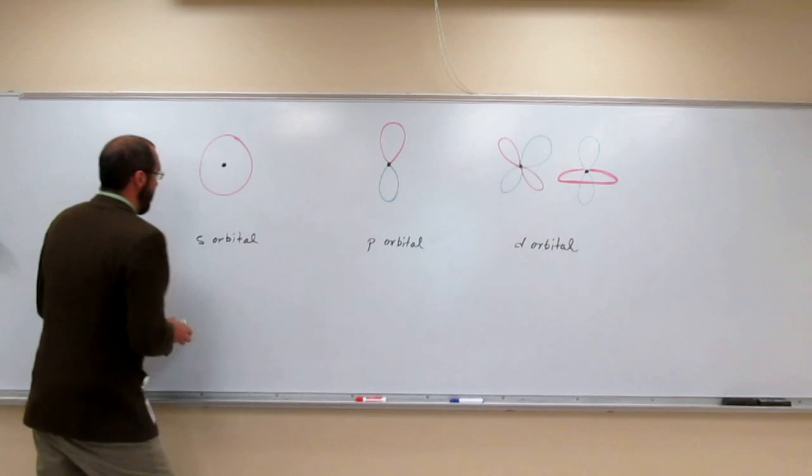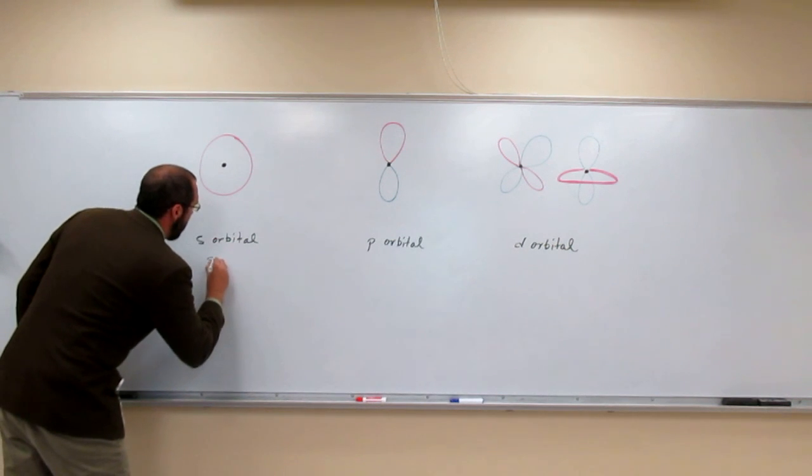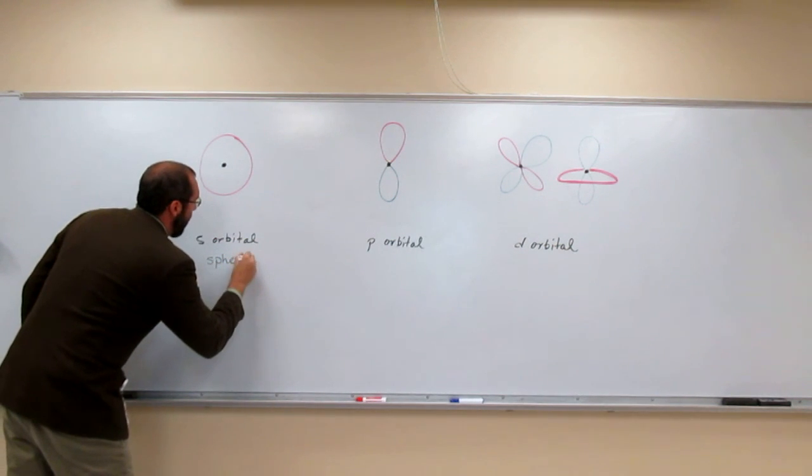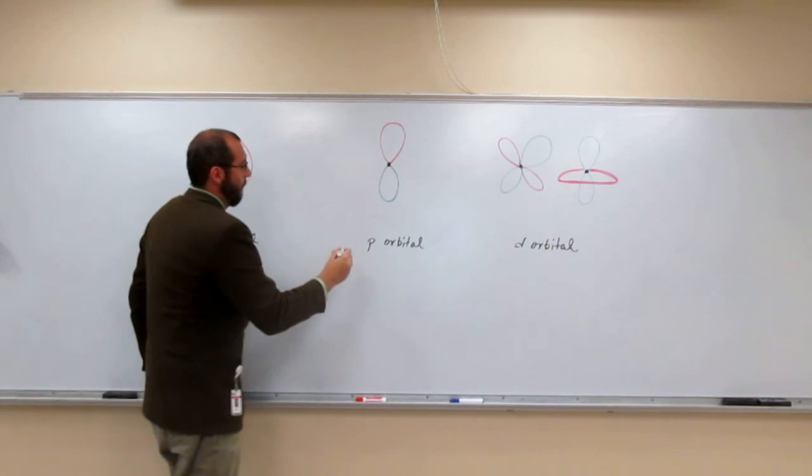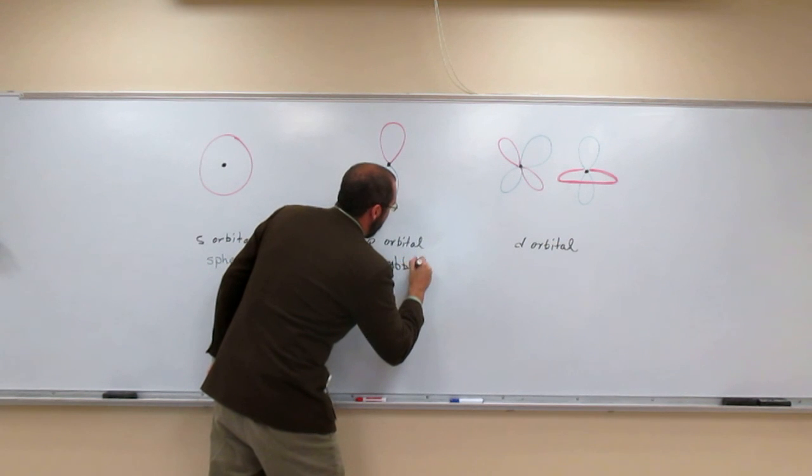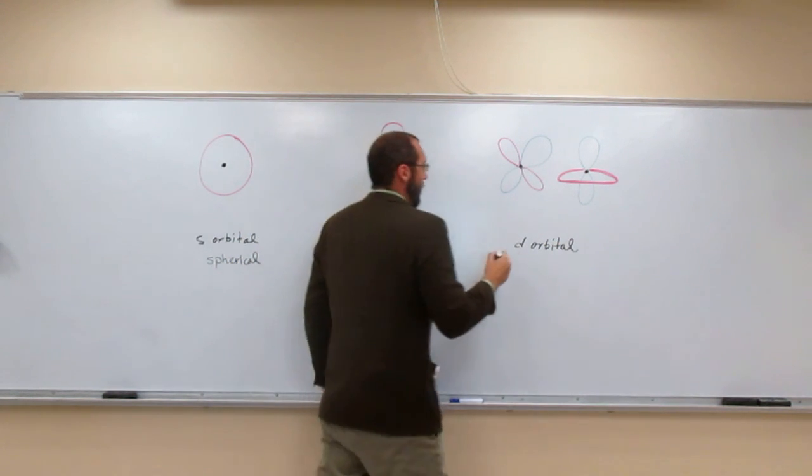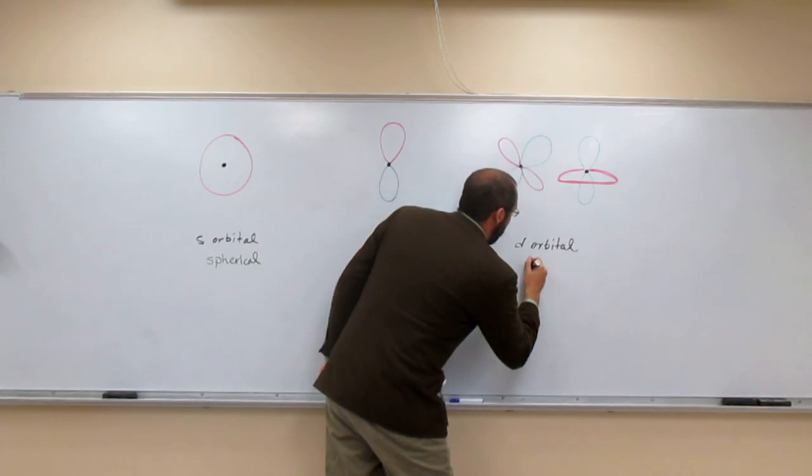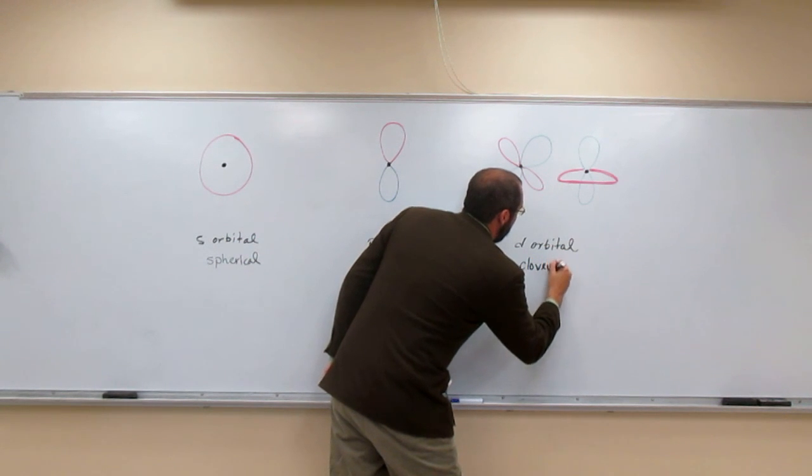So what do we say? S is spherical. P is dumbbell. And d is clover.